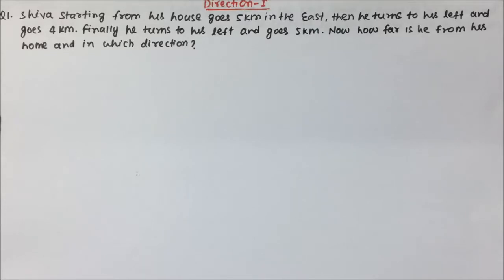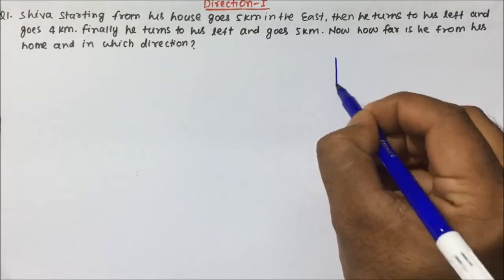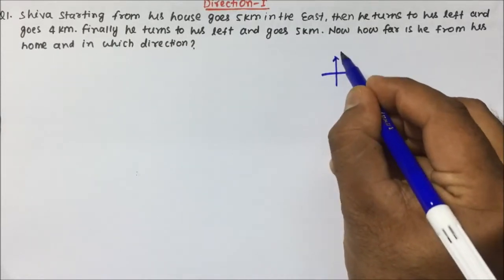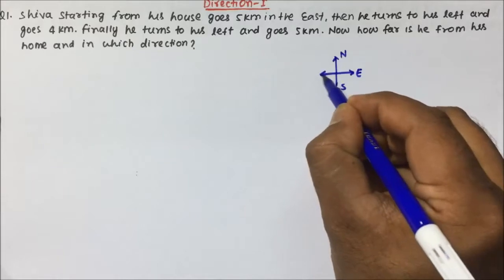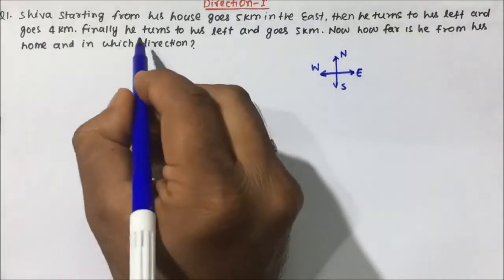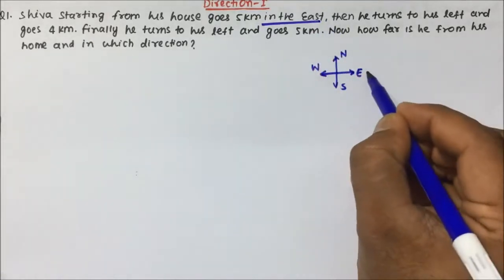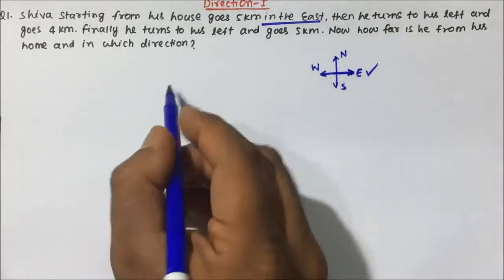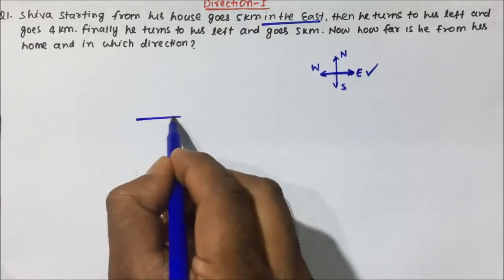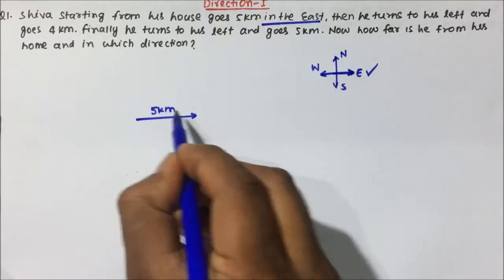So let's start with question number 1. Before solving any question of direction, first we have to draw the direction diagram — N, E, S, W. Now Siwa, starting from his house, goes 5 kilometers in the east. So east direction will be in this direction, and Siwa is going 5 kilometers in east direction.